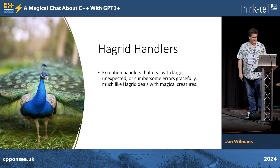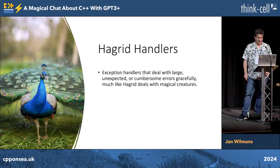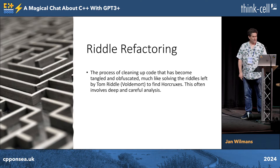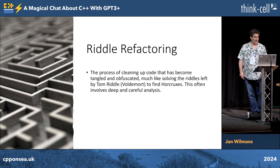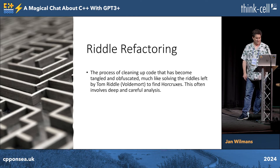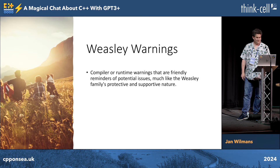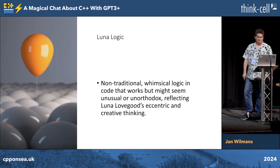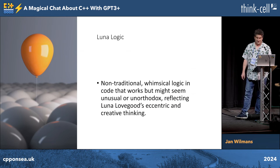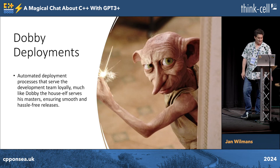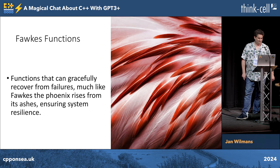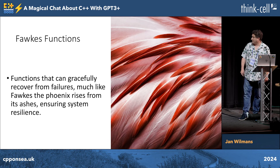Hagrid handlers: apparently something with exceptionally large lists of exceptions. Snape scripts: efficient, but use dark magic. Riddle refactoring: the process of untangling obfuscated code that involves riddles left by others. Weasley warnings: compiler or runtime warnings that are friendly reminders of potential issues. Luna logic: exceptionally non-traditional, whimsical logic that seems to somehow work anyway. Really helpful deployments — things that actually just work by magic. And a function that allows you to recover gracefully from death and apparently rises from its own ashes.